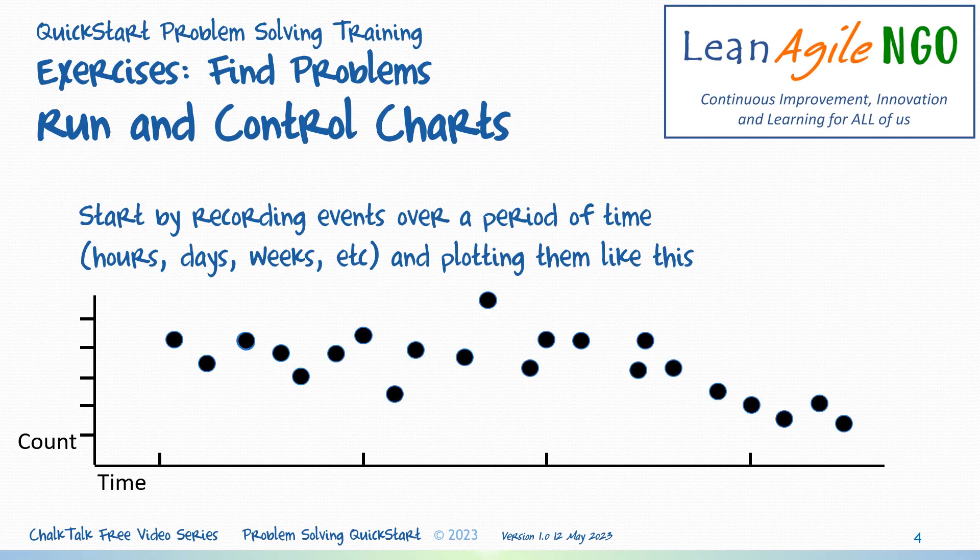Then we plot each day's count with a dot. You might look at event history if you have it, or just start tracking going forward. What you see here is a simple run chart.